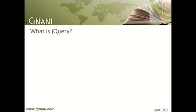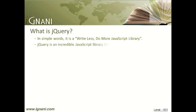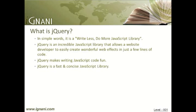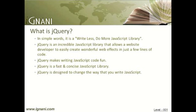So, what exactly is jQuery? In simple words, it is a write less and do more JavaScript library. jQuery is an incredible JavaScript library that allows a website developer to easily create wonderful web effects in just a few lines of code. jQuery makes writing JavaScript code fun. jQuery is a fast and concise JavaScript library. It helps programmers to keep code short and simple. It simplifies the process of traversal of the HTML DOM tree. You can use jQuery to handle events, perform animation, and add Ajax support into your web applications with ease. jQuery is designed to change the way that you write JavaScript.